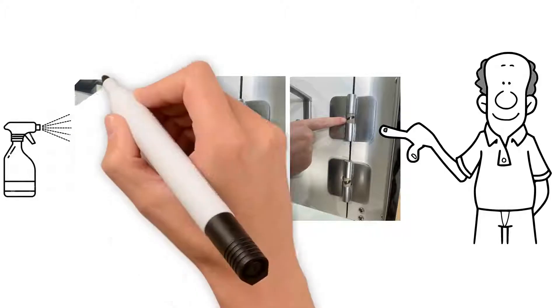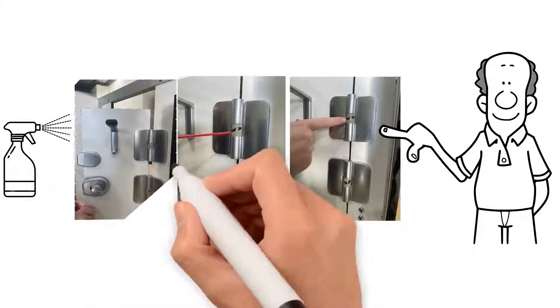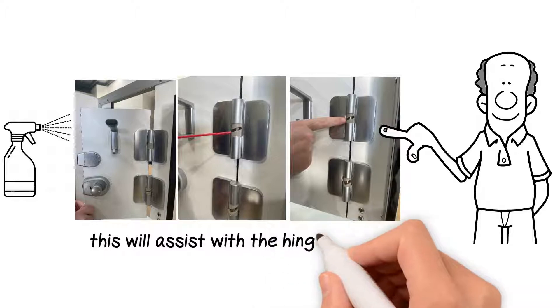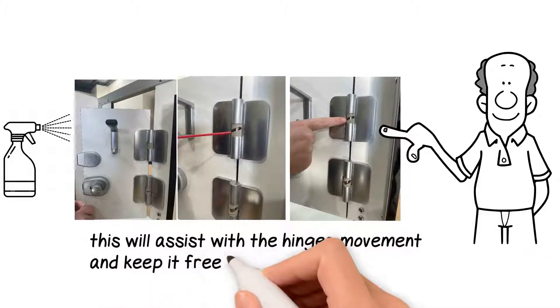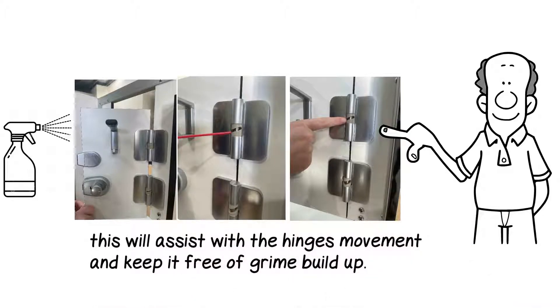As an added precaution, on a monthly basis, simply spray silicon spray whilst opening and closing the door around the internal hinge. This will assist with the hinges movement and keep it free of grime buildup.